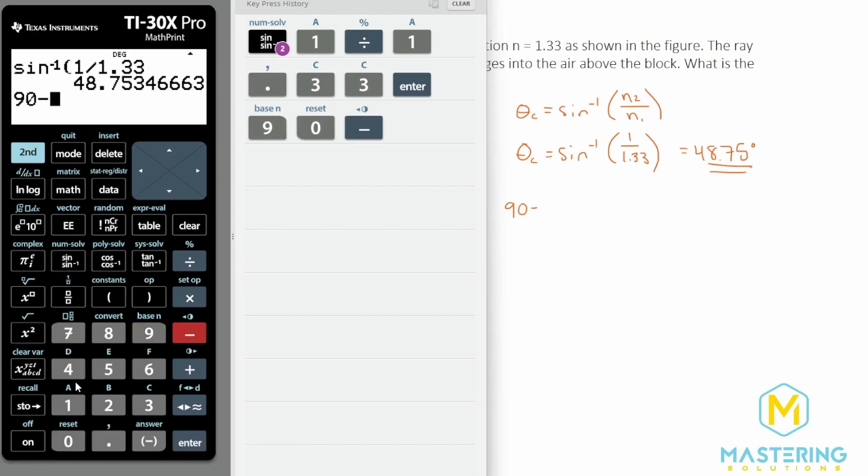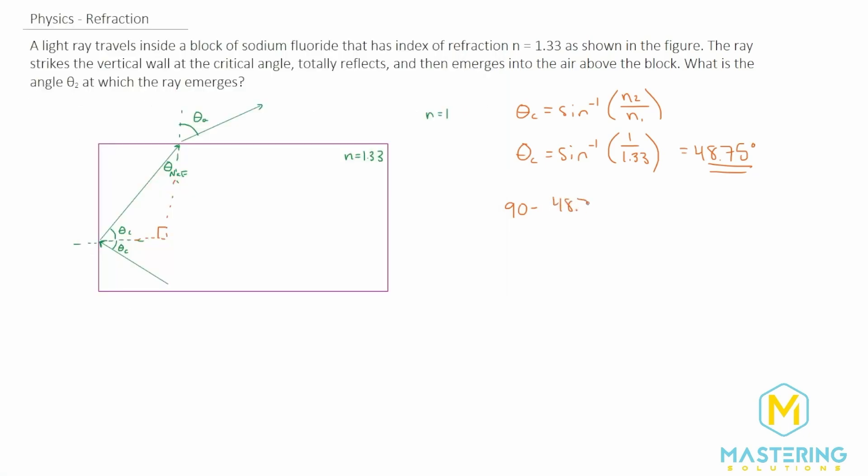So 90 minus 48.75 gives us 41.25, so 41.25 degrees for this angle.